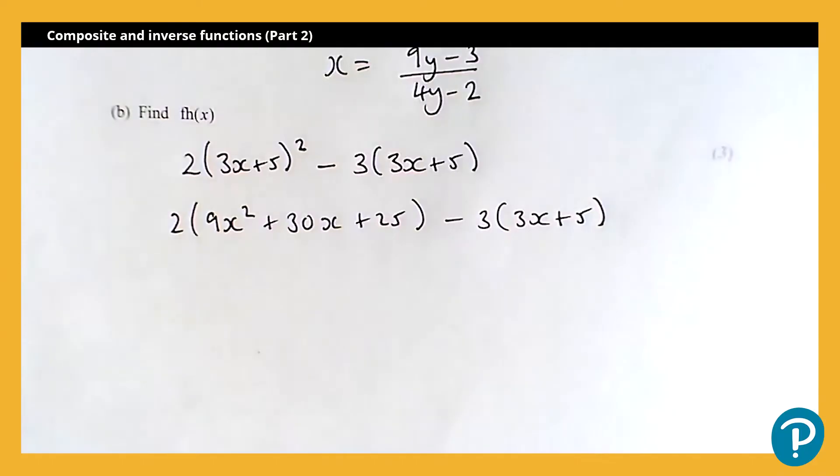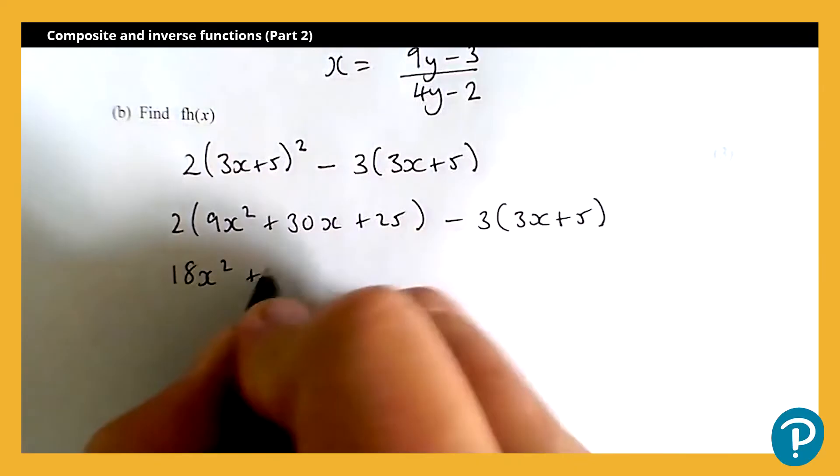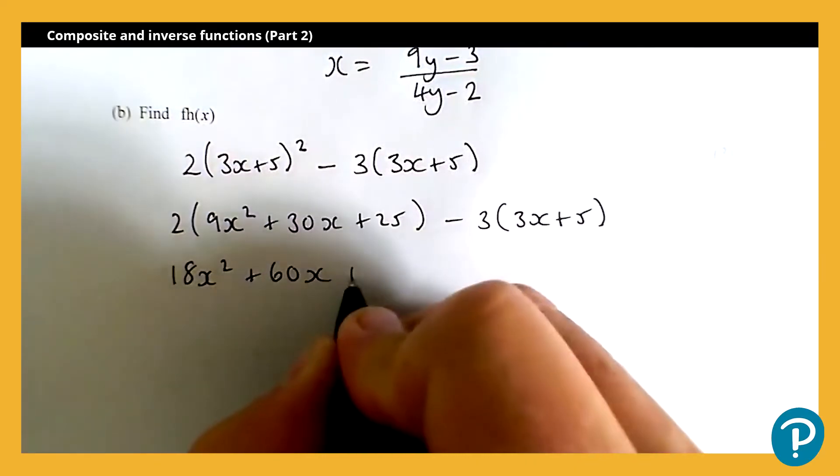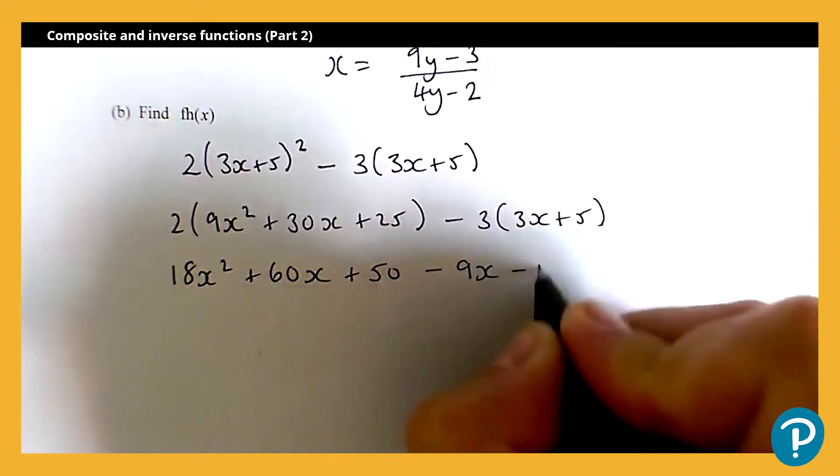Okay, now we can expand our two remaining brackets. 18 x squared, 60 x plus 50, subtract 9 x, subtract 15.